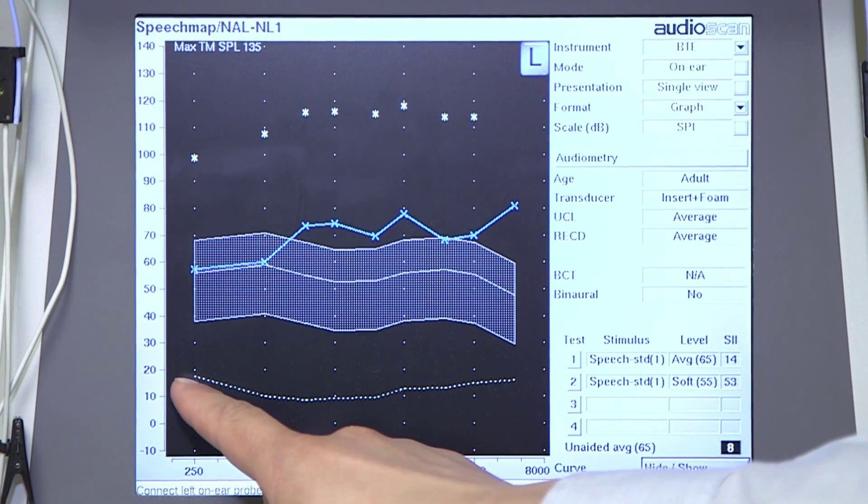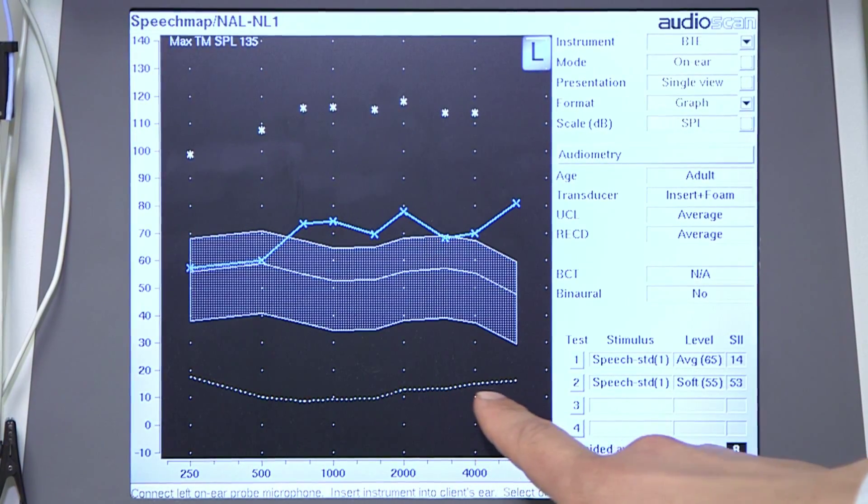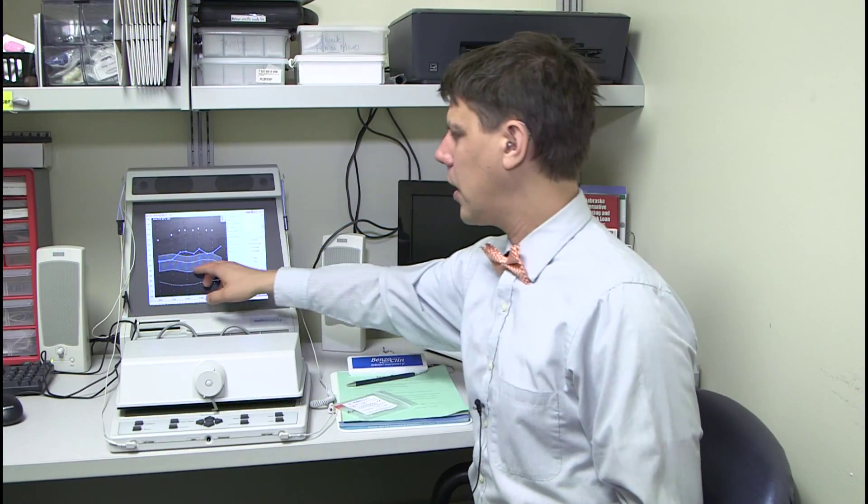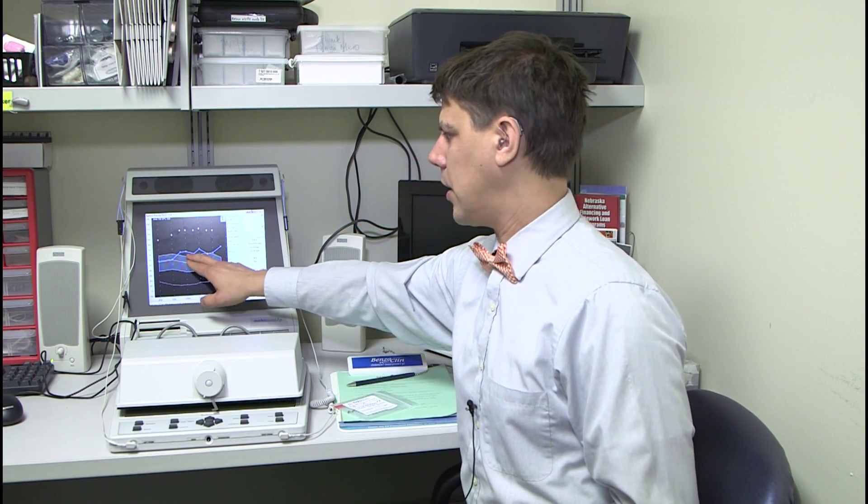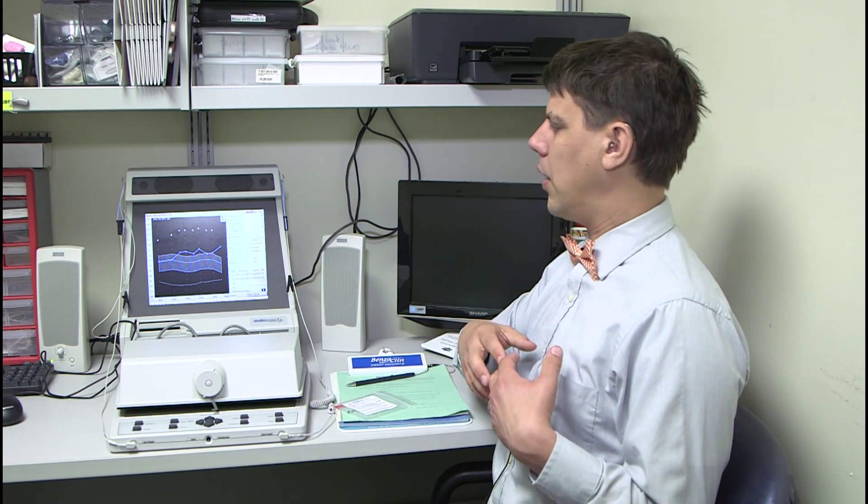Someone with normal hearing falls roughly where this dash line is. So they can hear anything that's plotted above that dash line. Then I have this little hatched area that's shown and that's for someone that's talking in a normal voice.